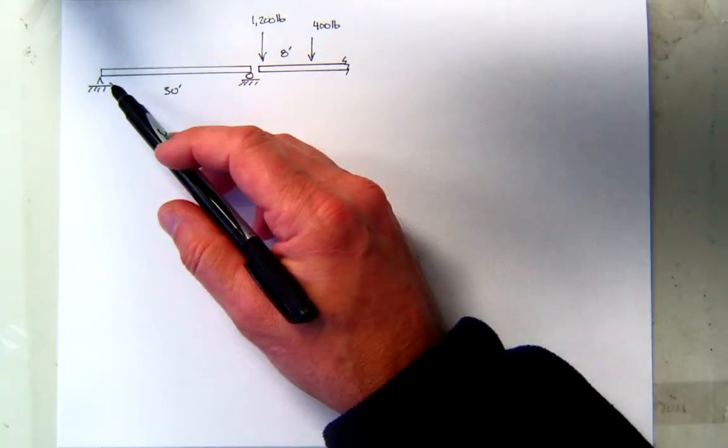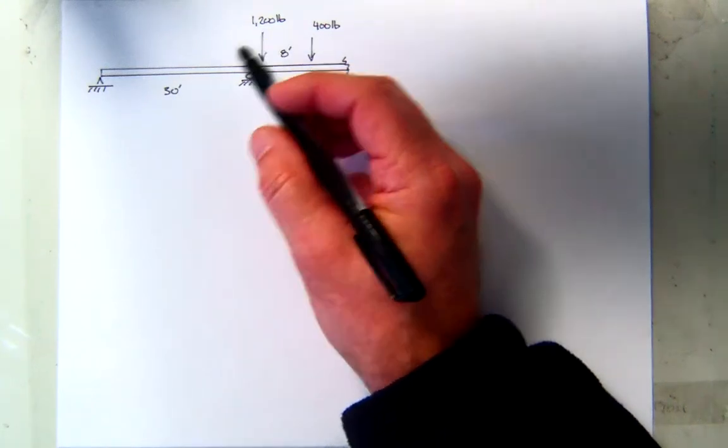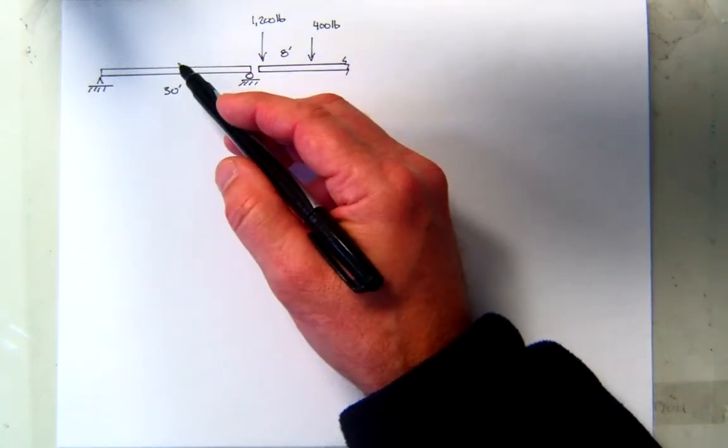Okay, so we've got a simple supported beam, span is 30, I've got a set of moving loads here. I want to find the maximum, absolute maximum moment of the structure.